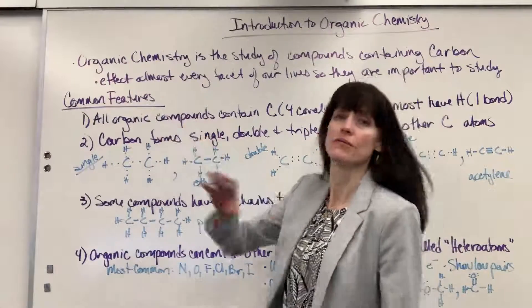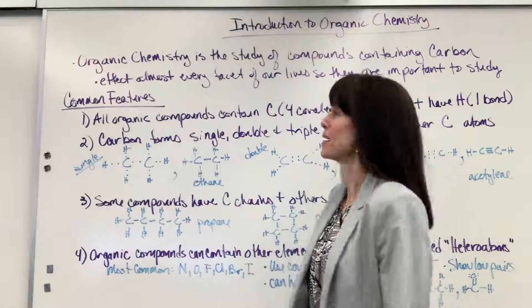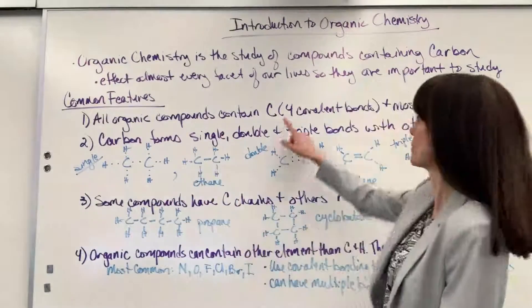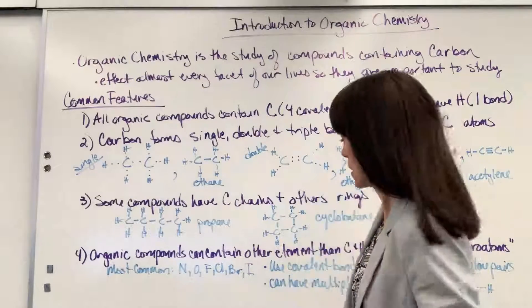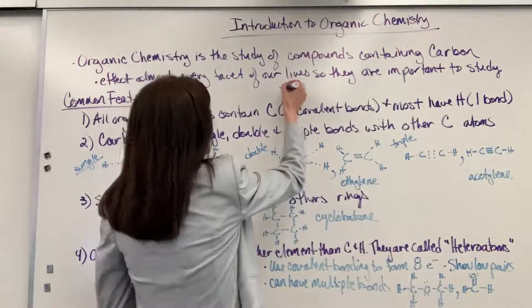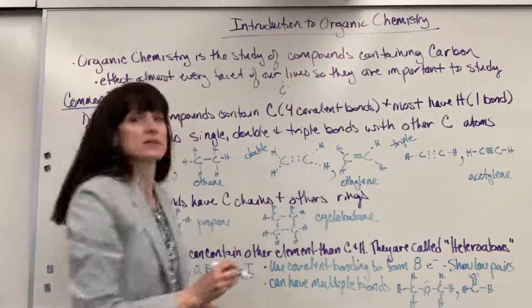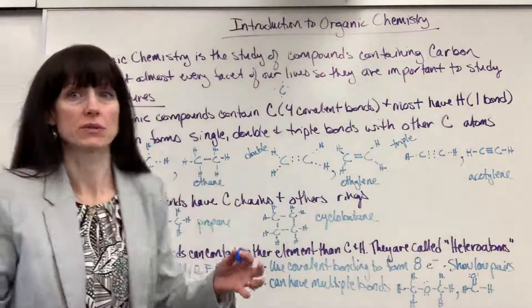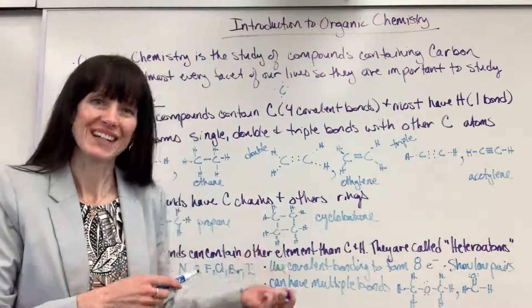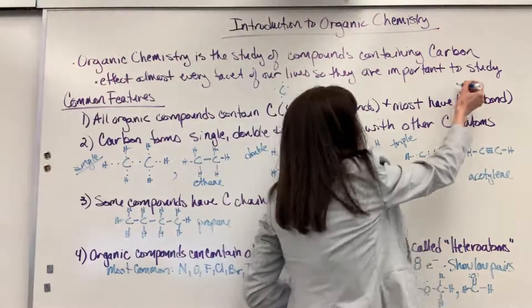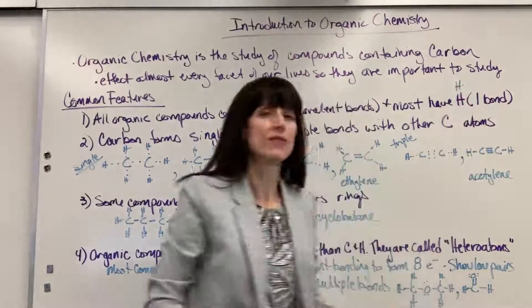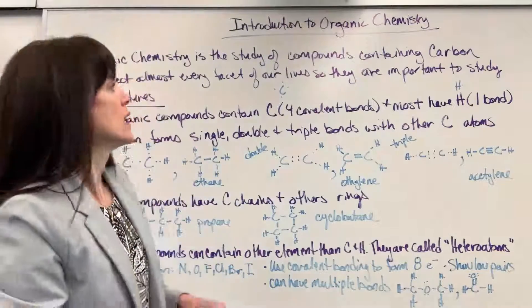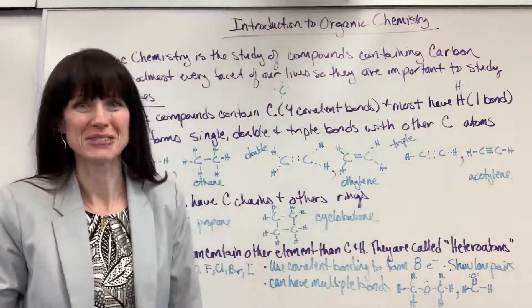Now there are four common features that I want you to know about organic molecules. First, all organic molecules contain carbon. Remember those have four covalent bonds because carbon has four valence electrons. So it's always going to have four bonds with it. And most organic compounds also bond with hydrogen. Remember hydrogen will have one bond, it has one valence electron, and to have a full valence shell it needs a total of two electrons. That's going to drive everything that we do.